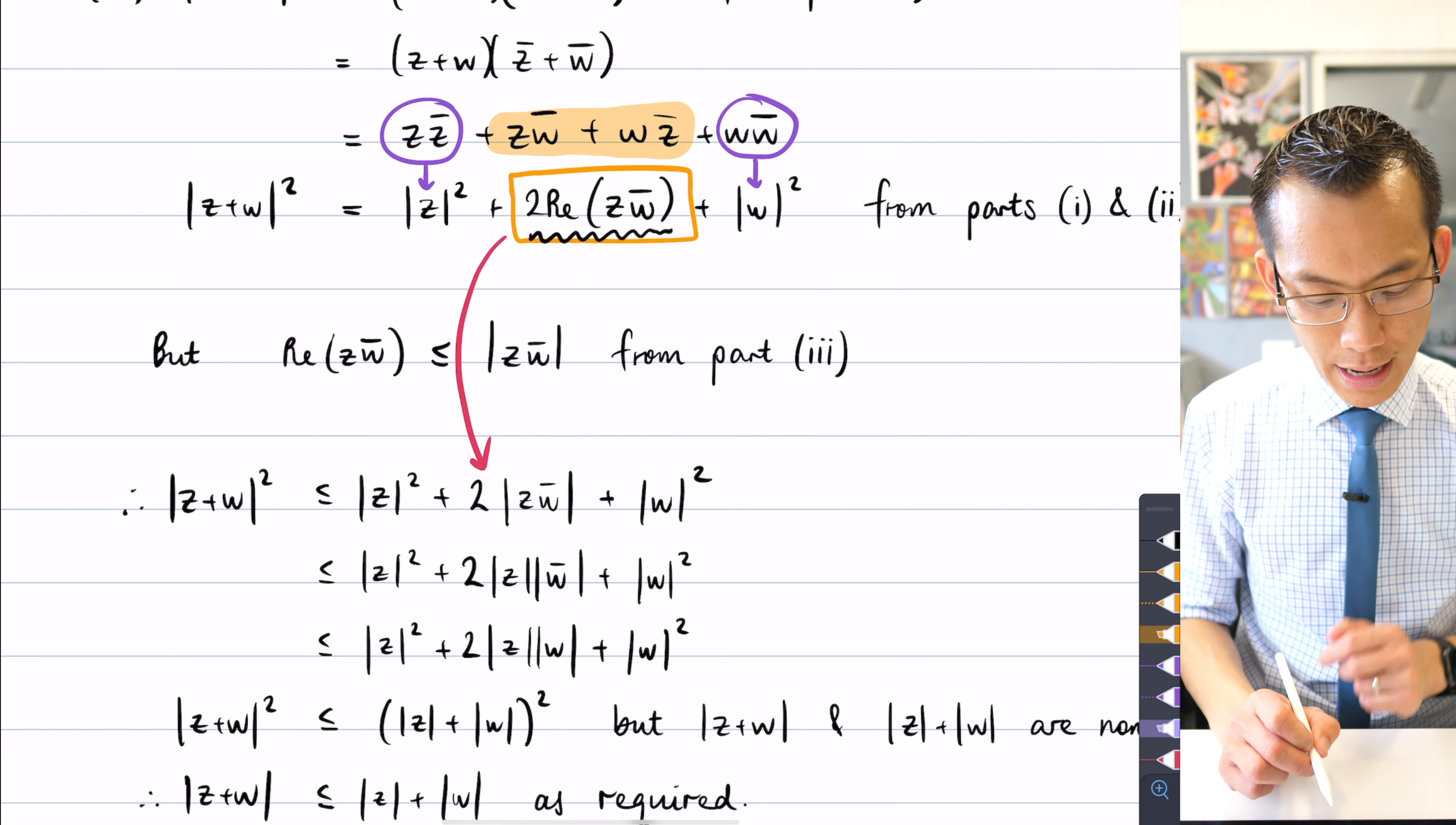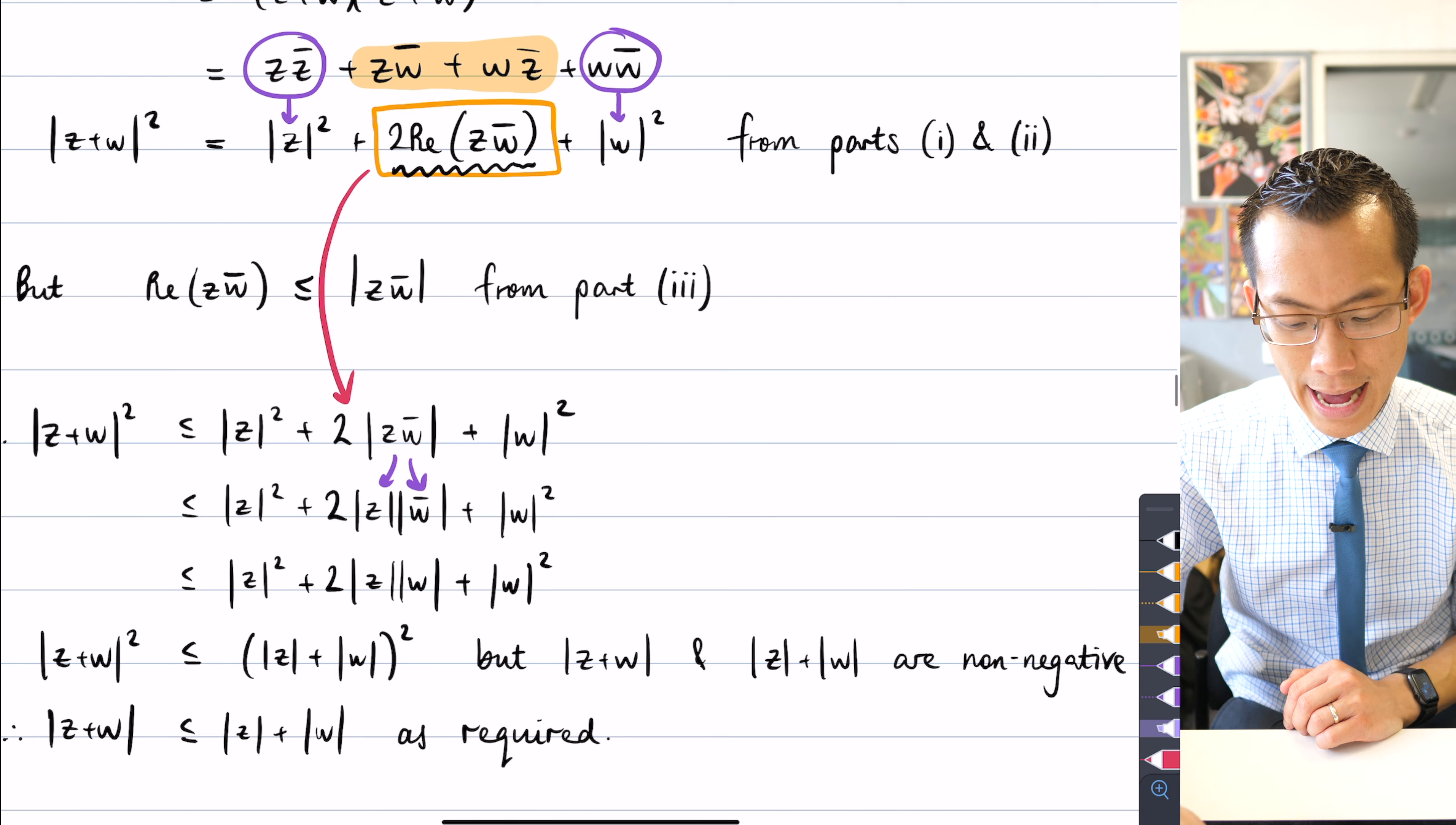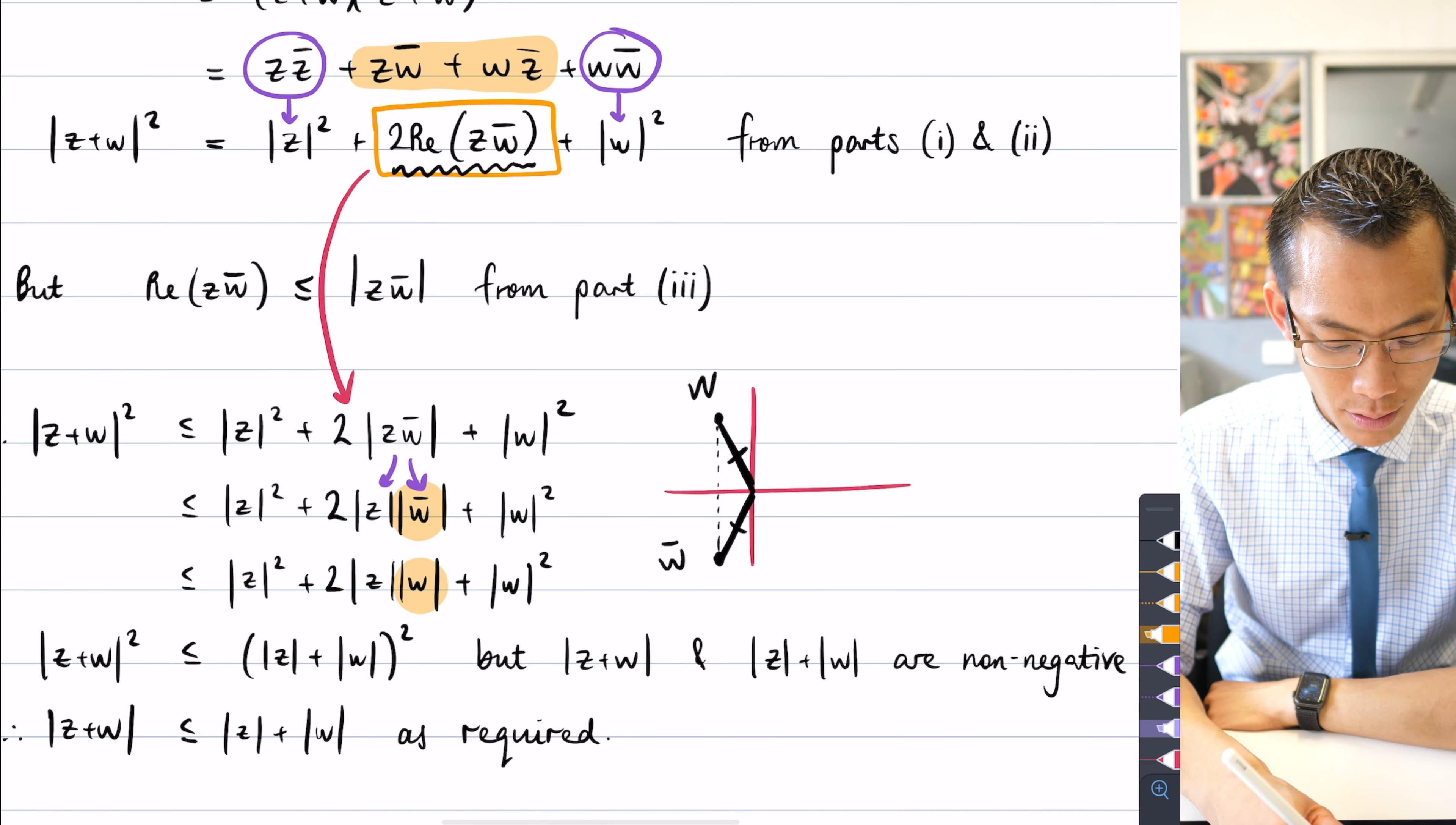So going from here to the next line, you can see I've again used this result that the modulus of a product is equal to the product of the moduli. I've split this apart into its two components. And the thing about the modulus of a conjugate is that what you've done is you've reflected to the opposite side of the real axis. So for example, if I were to place w over here, where would w bar be? It would be reflected across the real axis. And you can see that these two lengths are equal. So what I've done is I've substituted modulus of w bar with just the modulus of w.